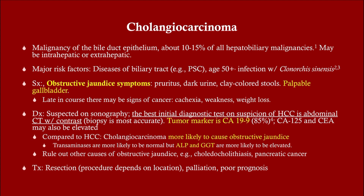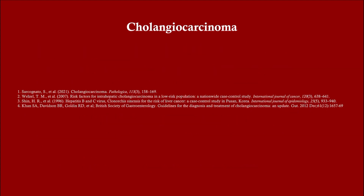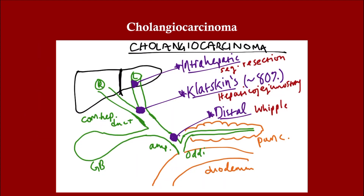Cholangiocarcinoma — I talked about this in the liver section so I'm not going to go into detail. Most cholangiocarcinomas occur at the confluence of the right and left hepatic ducts; that's called a Klatskin's tumor and it makes up about 80 percent of cholangiocarcinomas.